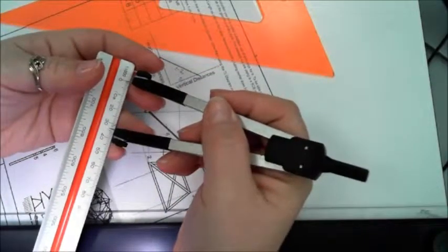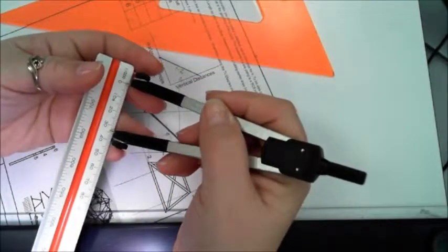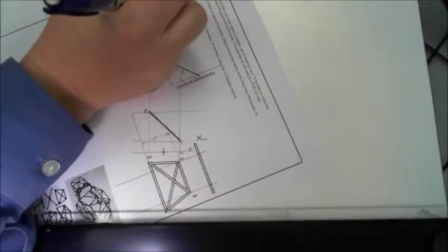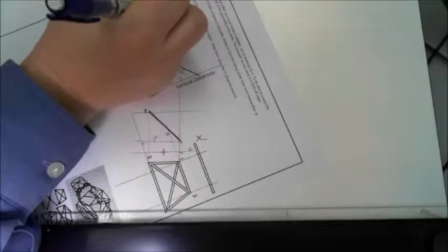So we are looking at 10, 20, 31, 32, 33 centimeters. So the distance from one to two is 33 centimeters.